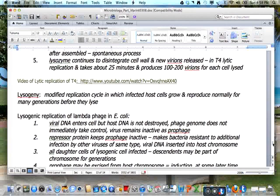Lysogeny is a modified replication cycle in which the infected host cell grows and reproduces normally for many generations before they lyse. This is seen with the lambda phage in E. coli. In this case, the viral DNA enters the cell but the host DNA is not destroyed.